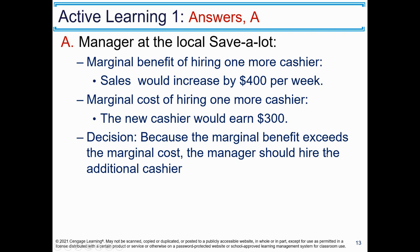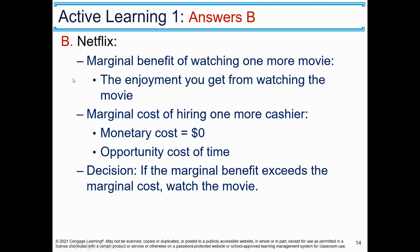For the Netflix example: you pay $12 a month for access to Netflix, regardless of how many movies or TV shows you watch. Marginal benefit of watching one more movie is the enjoyment you get from watching it. Monetary cost is zero, but the opportunity cost of time must be considered. If the marginal benefit exceeds the marginal cost, watch the movie. Thinking at the margin.